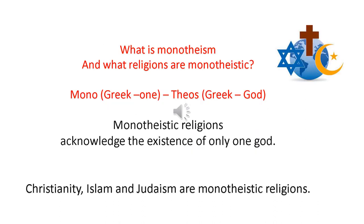First, let's find out what monotheism is and which religions are monotheistic. Mono from Greek means one or single, and Theos from Greek means God. So monotheistic religions acknowledge the existence of only one God. Christianity, Islam, and Judaism are monotheistic religions.